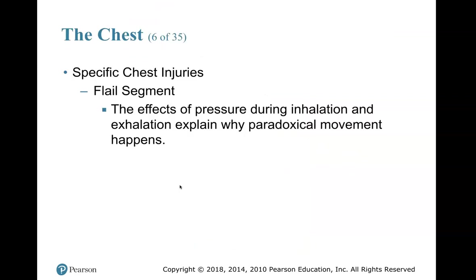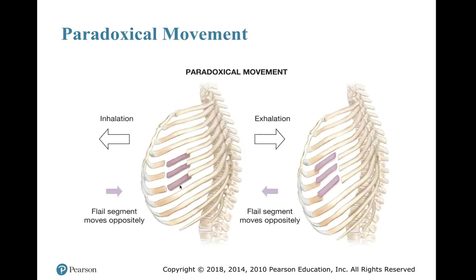A flail segment — the effects of pressure during inhalation and exhalation explain why paradoxical movement happens. Paradoxical movement is simply movement in the opposite direction. On inhalation, the chest expands but the flail segment moves inward — oppositely. On exhalation, the chest cavity shrinks and the flail segment expands, moving in the opposite direction.